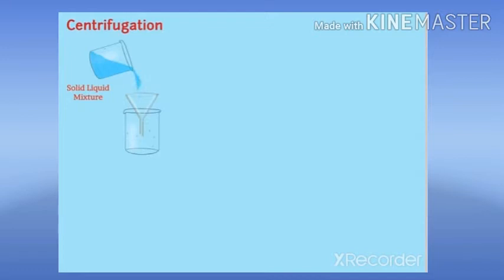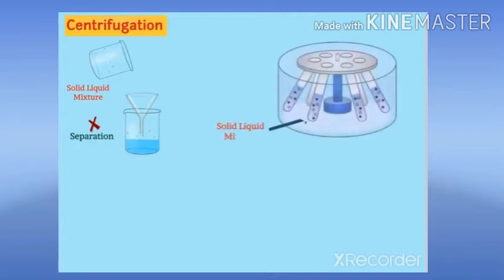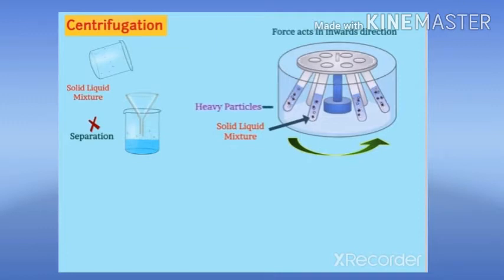Centrifugation. Sometimes in solid-liquid mixtures, solid particles are so small that they easily pass through filter paper, thereby making their separation impossible. In such cases, the technique of centrifugation is used. In this method, a solid-liquid mixture is allowed to spin in a container. During the spin, force acts in the inward direction, due to which heavy particles settle at the bottom while lighter particles remain at the top.